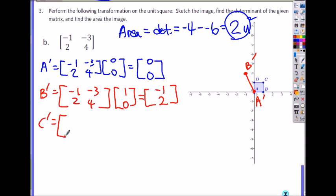C prime. This is number 3, B. Negative 1, negative 3, 2, 4. You multiply with 1, 1. So this one you get negative 1 plus negative 3, right? When you multiply by 1 and 1, so negative 4. 2 plus 4, which is 6. So negative 4, 6. C prime.